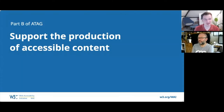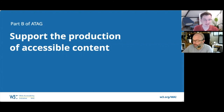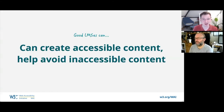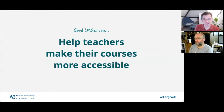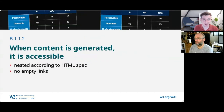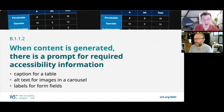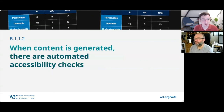Now we'll look at Part B of ATAG, which is about supporting the production of accessible content. Where Part A ensures people with disabilities can create content, Part B is about making sure the content they create is accessible. Good learning management systems can create accessible content and help avoid inaccessible content. For instance, by ensuring generated content follows specifications and avoids problems like empty links. A good LMS could also ask for required accessibility information — when it creates a table or a carousel, it would ask for a caption or alternative text, since without these, content won't be usable for people with disabilities.